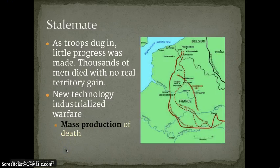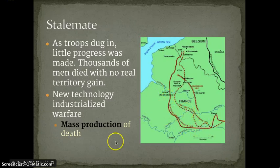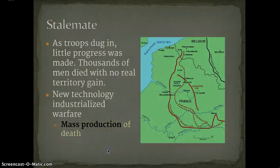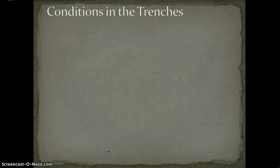All of this resulted in a stalemate — troops dug in and little progress was made. Thousands of men died and no real territory was gained. By 1918, the Germans hadn't gotten much further than 1914. It was really a futile effort and people started to get really fatigued, realizing it wasn't working.